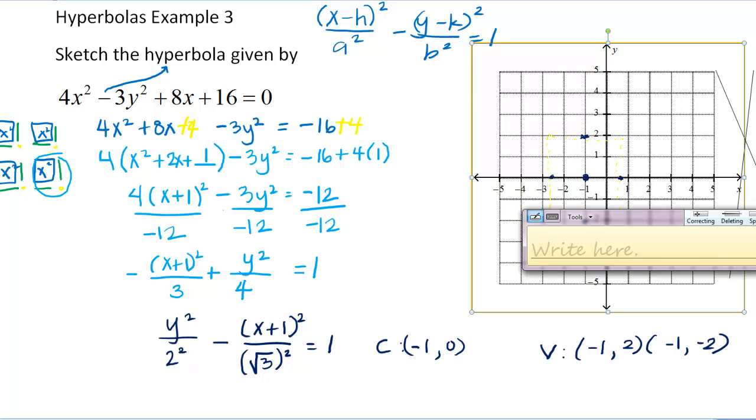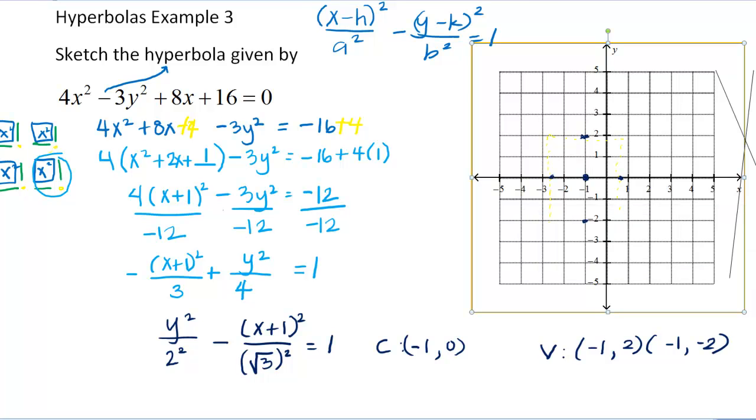Okay, and then so now I have my rectangle. Now this rectangle is just going to, I'm going to connect my asymptotes with it. That's why I use my rectangle. So let me go back here.